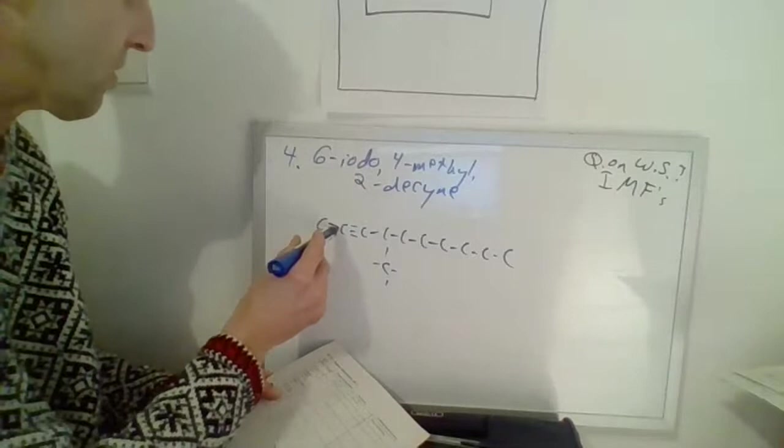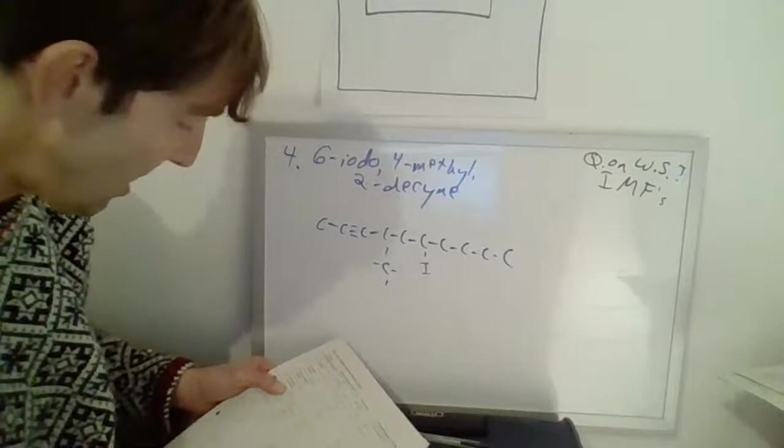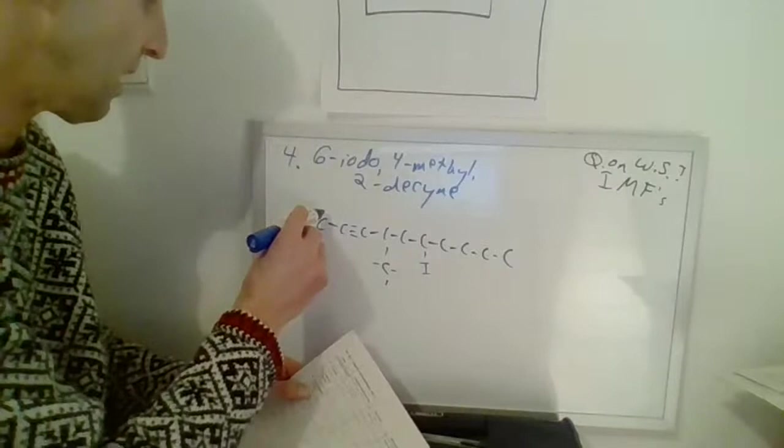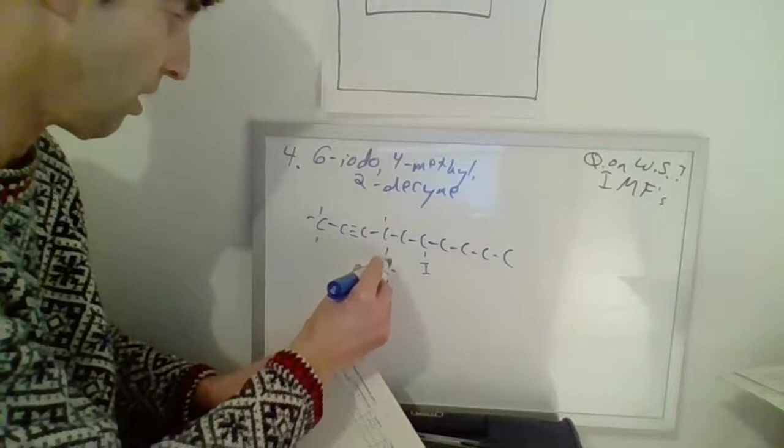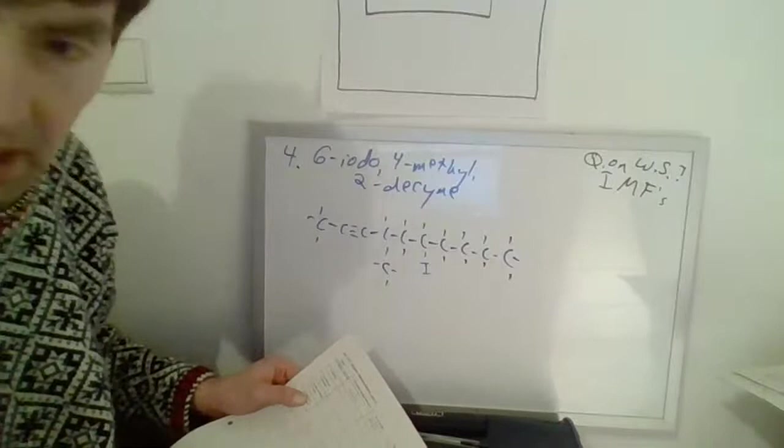Now, we've got to go to six, and six is iodo. One, two, three, four, five, six is an iodine. Iodo is the prefix for that. And I think that's it, isn't it? Anything else on there that I missed? Nope, that's it. And then let's fill in with H's, right? None there, none there. There's one, two, one, two, two, two, three, I think. Hope that was helpful on number four.